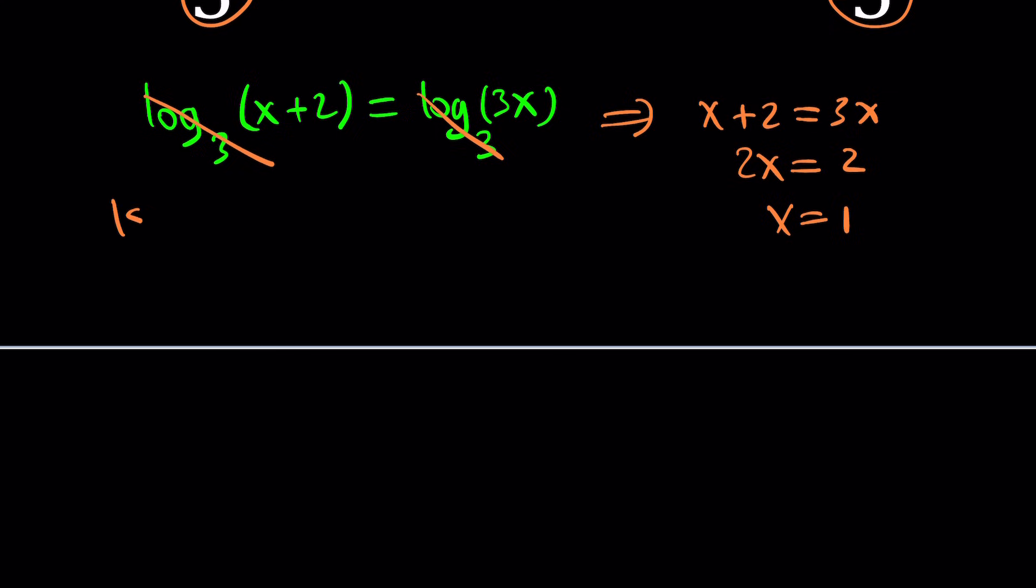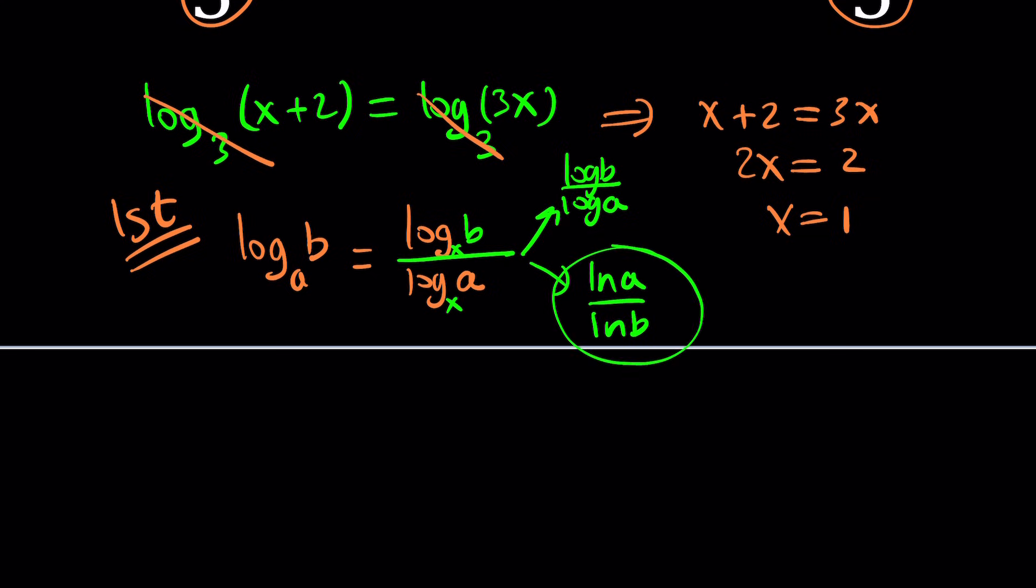Let's make an attempt to simplify this. There's a formula called change of base with logarithms. If you have logₐ(b), then you can write this as log(b) over log(a). The bases here could be 10 or e. Let's use natural logs for this problem, so you can write this as ln(b) over ln(a).